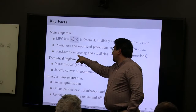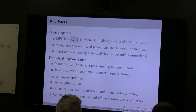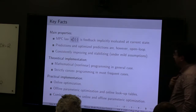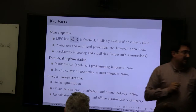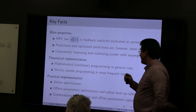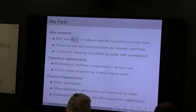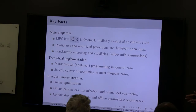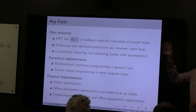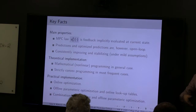The MPC control law is just the first optimizer — the first term of the optimal control sequence. This is a feedback, implicitly computed at the state x. The predictions are open-loop. But under relatively mild assumptions on the terminal cost and terminal set — namely positive invariance of the terminal set and the terminal cost — you have a consistently improving and stabilizing scheme. The theoretical formulation essentially gives you a mathematical programming problem. In the most frequent case of linear dynamics, polytopic constraints, and strictly convex cost functions, you end up with strictly convex programming.